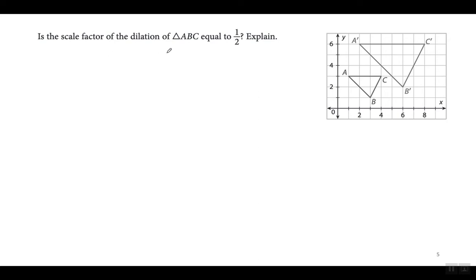Here they ask: is the scale factor of the dilation of triangle ABC equal to one half? That has to be wrong. Triangle ABC is the pre-image and A'B'C' is our image — the new one. I know because of the apostrophes that A'B'C' is the new one. So you're going from the small one to the bigger one, which means the scale factor has to be a number greater than 1 — it cannot be less than 1.